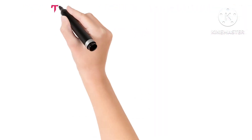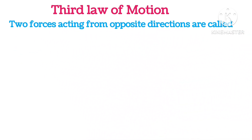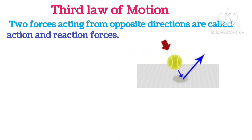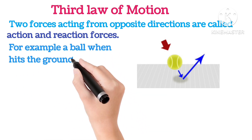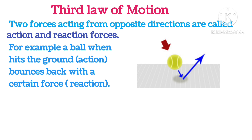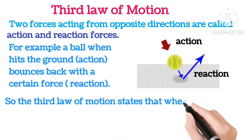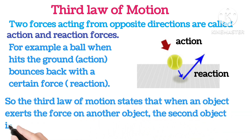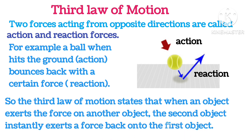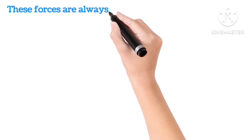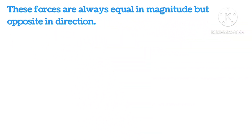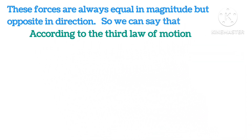Third law of motion. Two forces acting from opposite directions are called action and reaction forces. For example, a ball hitting the ground is the action, and it bouncing back with a certain force is the reaction force. The third law of motion states that when an object exerts a force on another object, the second object instantly exerts a force back on the first object. These forces are always equal in magnitude but opposite in direction. So, every action has an equal and opposite reaction.